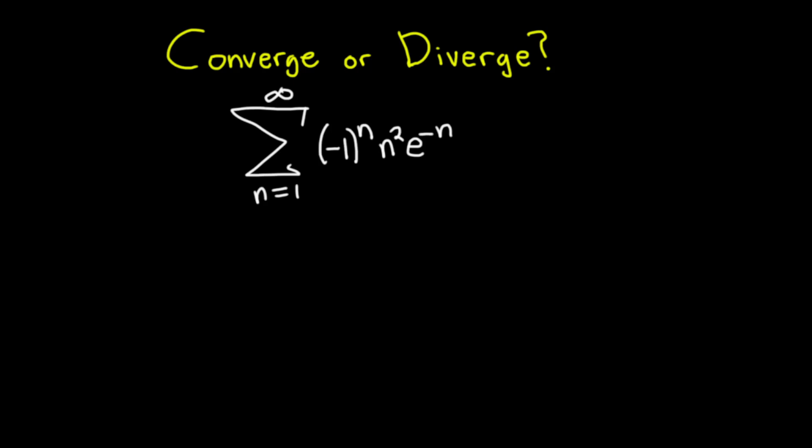In this video we're going to look at an infinite series and determine if it converges or diverges. Our series is the sum from 1 to infinity of (-1)^n times n^2 times e^(-n). To do this problem we're going to apply the ratio test.